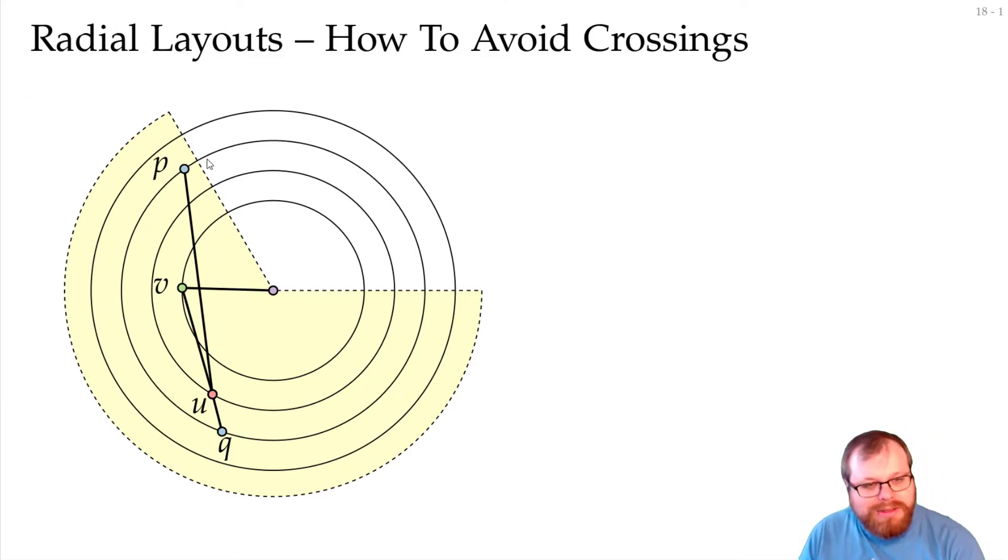Let's have a closer look at the situation. How can we avoid crossings? Let's say we are currently in this area, and when we place p over here, then we get a crossing like this. In the case where we get a crossing, we want to find some place where we are sure that there cannot be a crossing at all. So we want to find some part of this circle here, where we can definitely place p without getting a crossing.